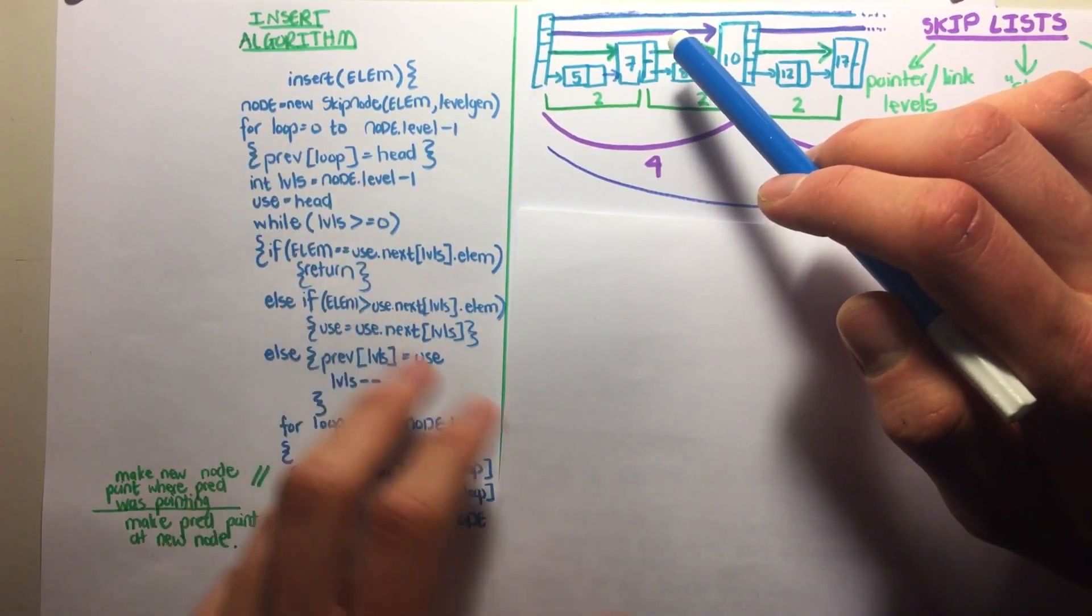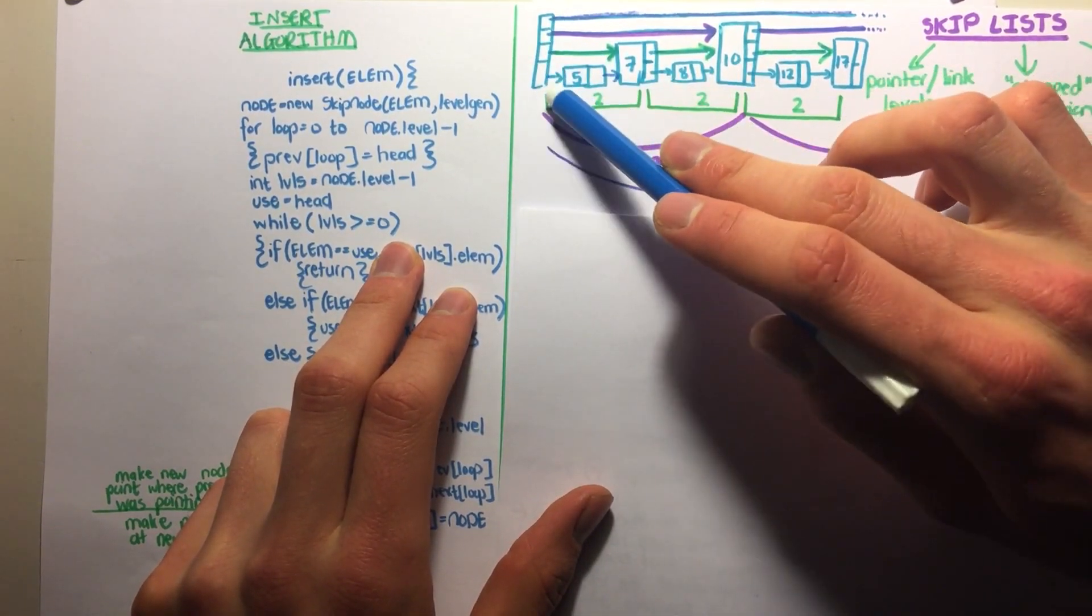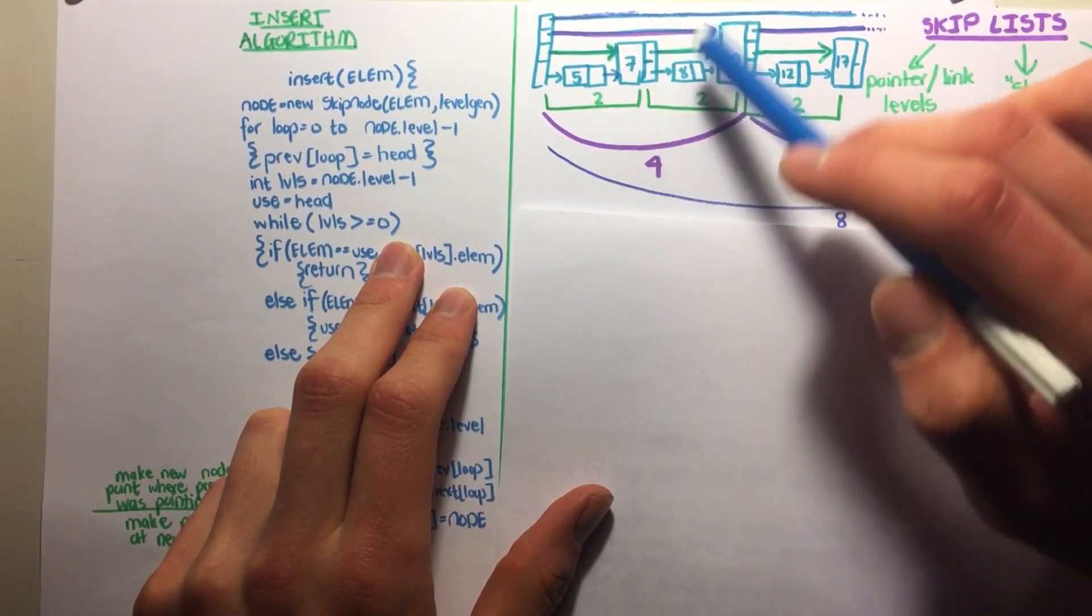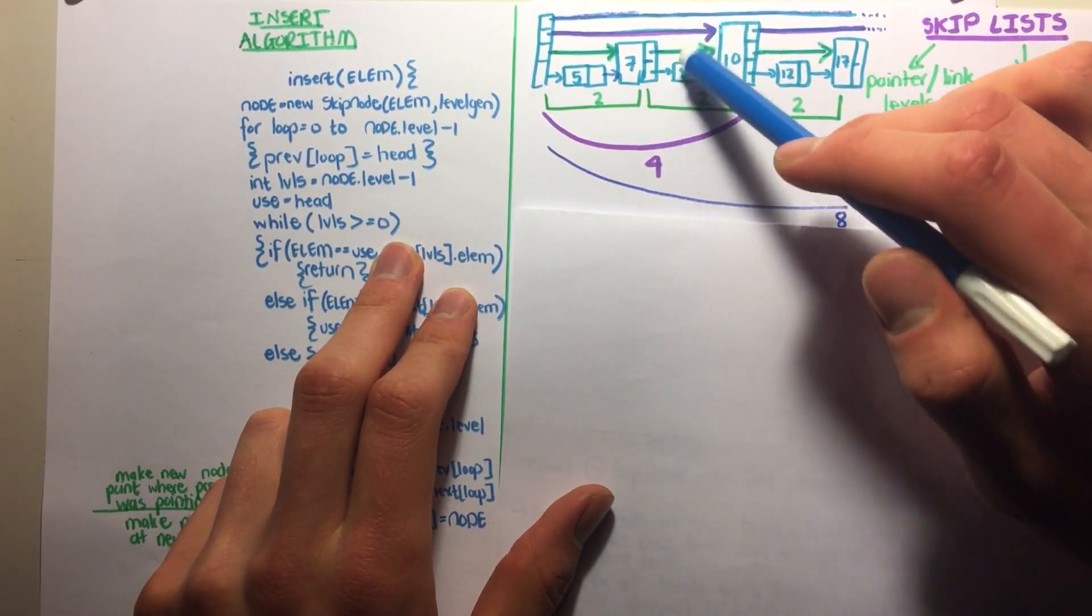Then we initialize everything and say while levels is greater than or equal to 0, we're going to go through this level, this level, and this level. We have to find all the predecessors that we need to insert 9 with 3 levels.